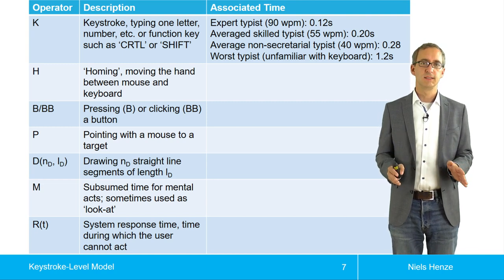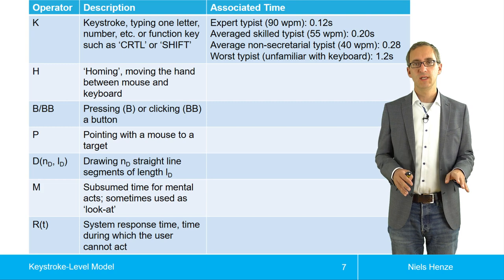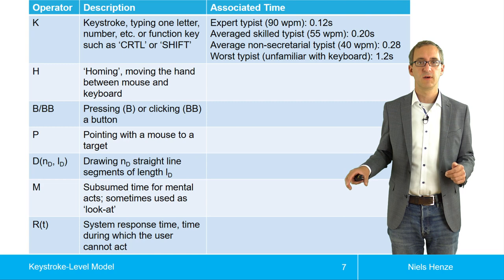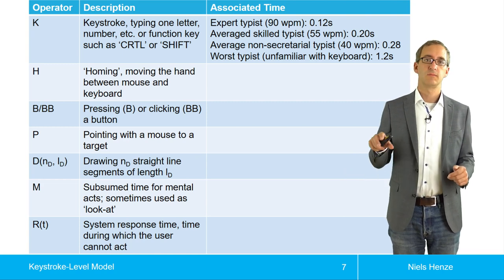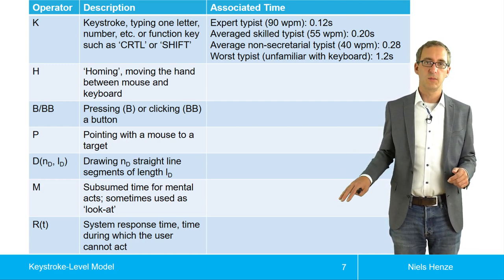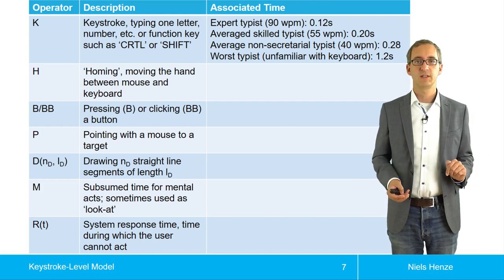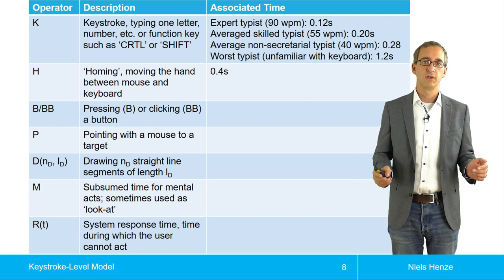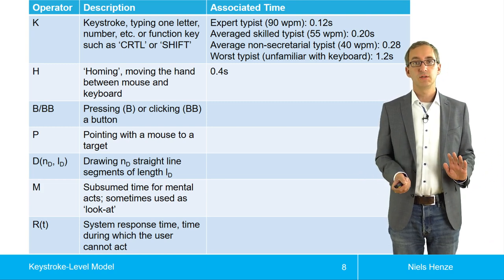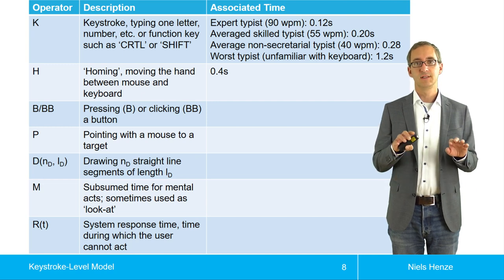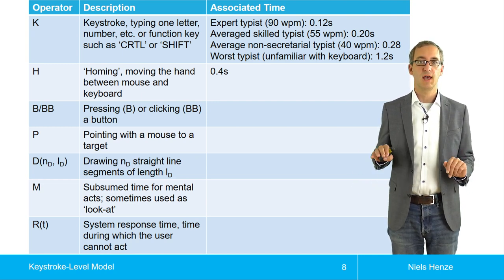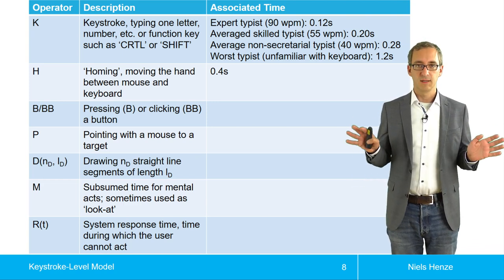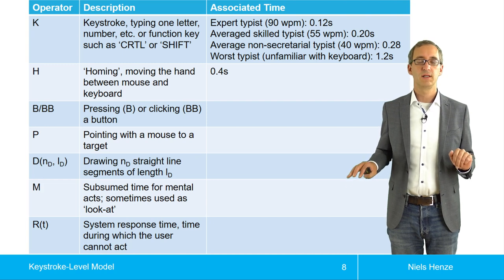The next operator is the homing operator. Homing means I move the hand between the mouse or the pointing device and the keyboard and back again. One change from mouse to keyboard is considered a homing operation, and that takes 400 milliseconds. What's important to note is that whenever we type or point, KLM assumes that we have to move the hand. So it's not possible to type while your hand is on the mouse.